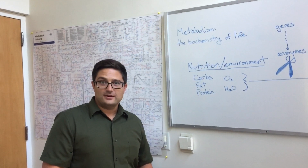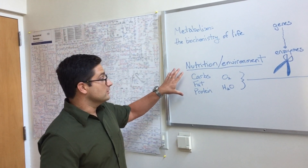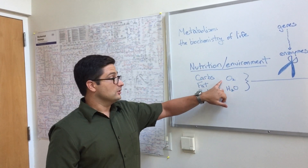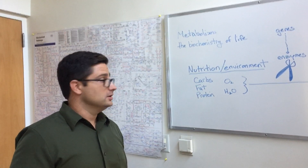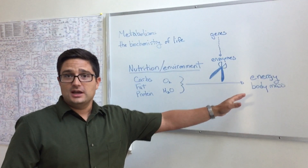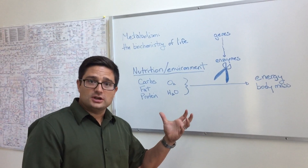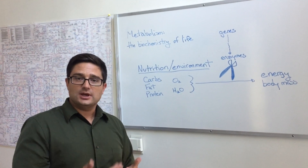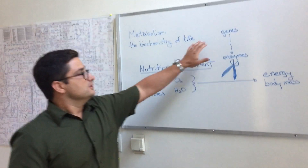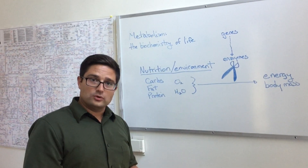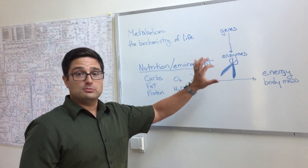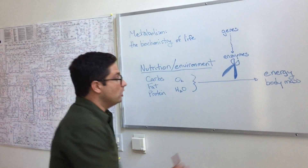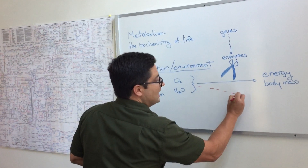Metabolism is the biochemistry of life. This is how we convert our food and nutrients that we take in from the environment, along with oxygen and water, to energy and body mass. We have little machines in our bodies called enzymes, which catalyze these chemical reactions. But sometimes things go wrong. Genetic mutations that we can acquire or be born with can cause changes in the blueprints of these enzymes, and cause them to make the wrong and sometimes toxic byproducts.